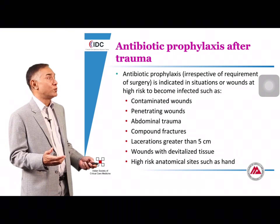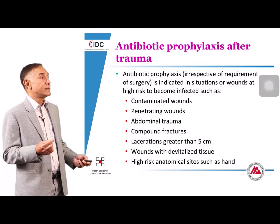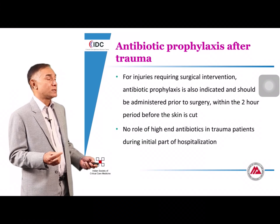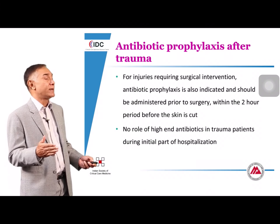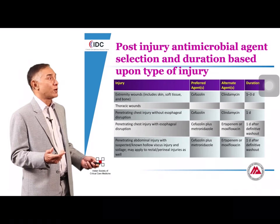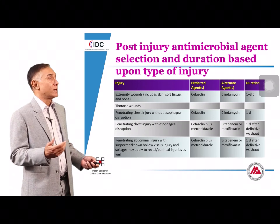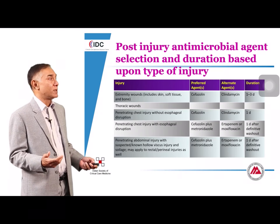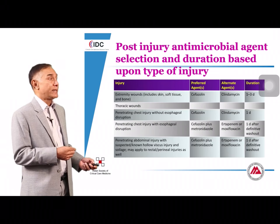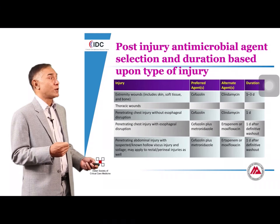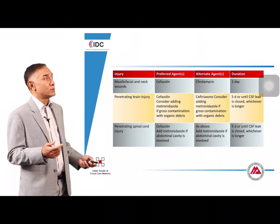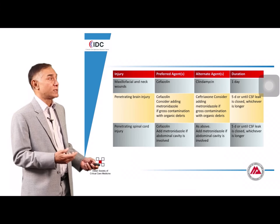Antibiotic prophylaxis after trauma is indicated for contaminated wounds, penetrating wounds, abdominal trauma involving the bowel, lacerations more than five centimeters, and high-risk anatomical sites. Prophylaxis should begin when the patient arrives and continue throughout the surgical debridement period. For extremity wounds, the target pathogen is Staphylococcus, so cefazolin or clindamycin for one to three days is appropriate. Penetrating chest injury is similar; esophageal disruption warrants adding metronidazole for anaerobes. Penetrating abdominal injury requires a first- or second-generation cephalosporin with metronidazole until bowel toileting is complete.